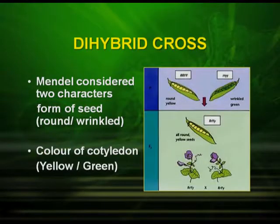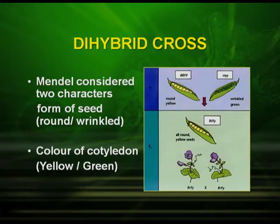What is the meaning of dihybrid cross? Dihybrid means the plants that are differing in two characters. So we cross a plant which differs in two characters. Mendel, in his dihybrid cross, considered two characters: the form of the seed, whether it was round or wrinkled, and the color of the cotyledon, whether it is yellow or green. When he crossed the two plants, let us see and analyze the result.